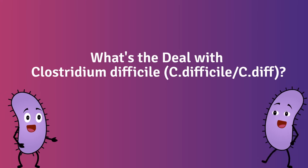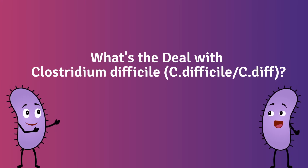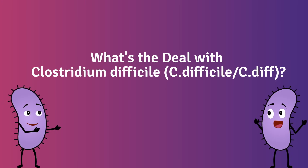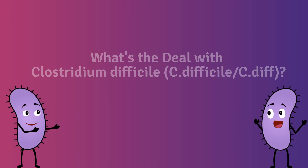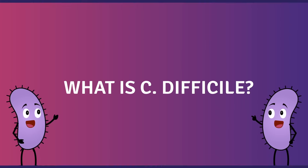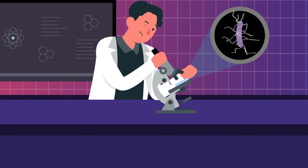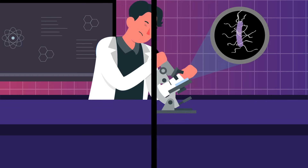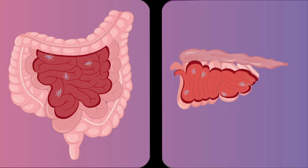Today we're diving into the world of Clostridium difficile, or C. diff — and trust us, it's more interesting than it sounds. What is C. difficile? Clostridium difficile is a type of bacteria commonly found in the environment and the intestines of humans and animals.